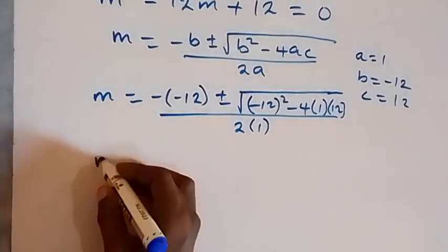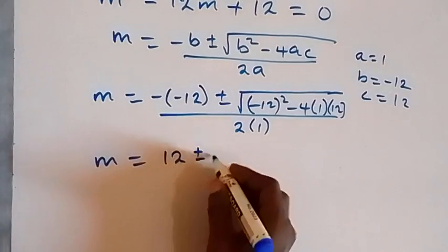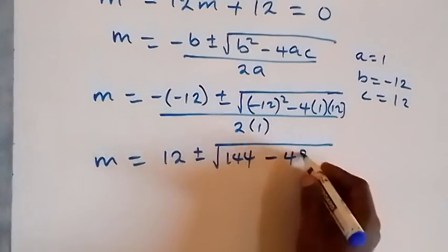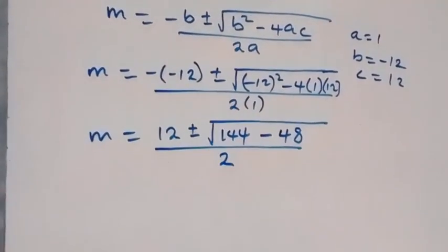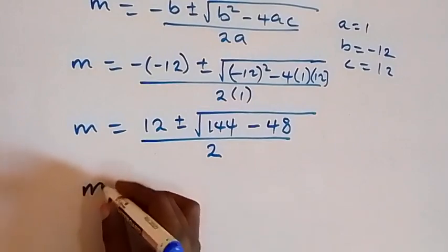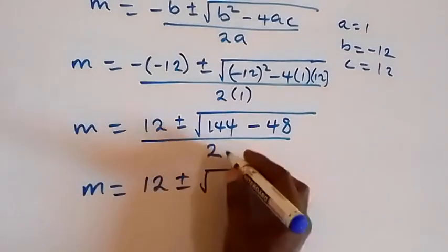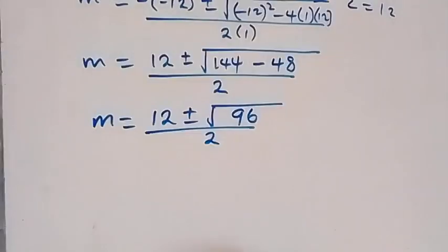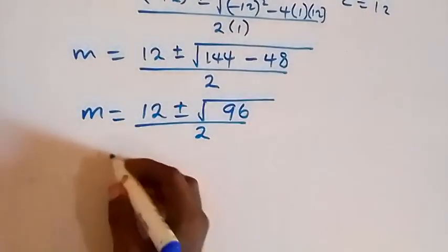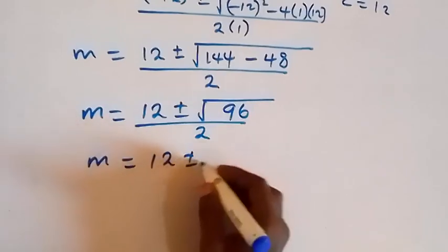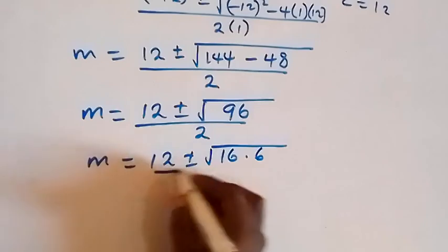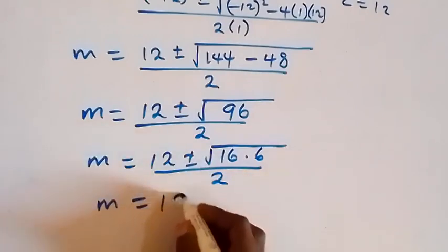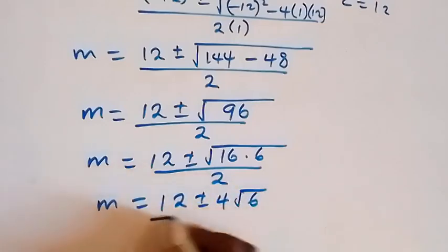When we solve this, m equals 12 plus or minus square root of 12 squared, which is 144, minus 4 times 12, which is 48, divided by 2. This becomes m equals 12 plus or minus square root of 144 minus 48, which equals 96, over 2. We can write 96 as 16 times 6, so m equals 12 plus or minus square root of 16 times 6, over 2. Separating root 16 gives 4, so m equals 12 plus or minus 4 root 6, over 2.